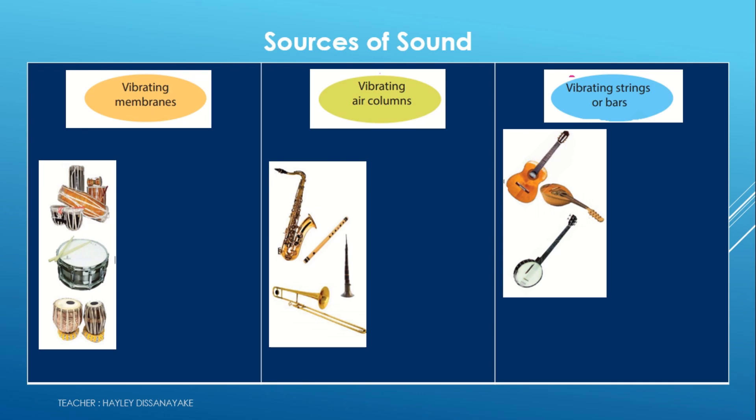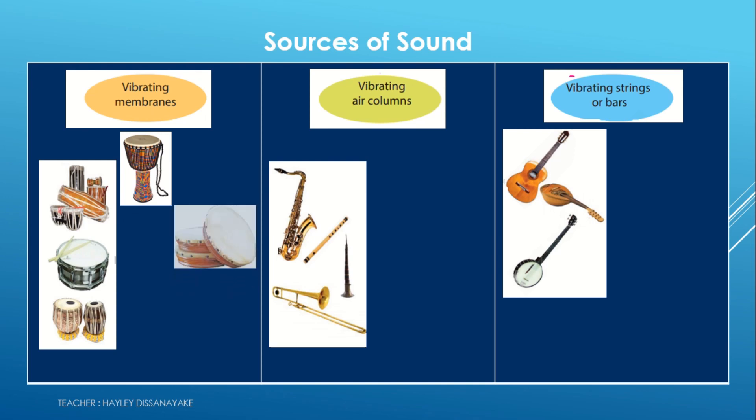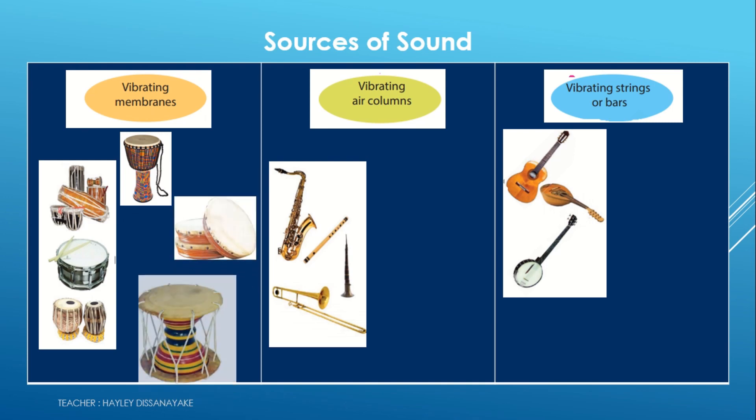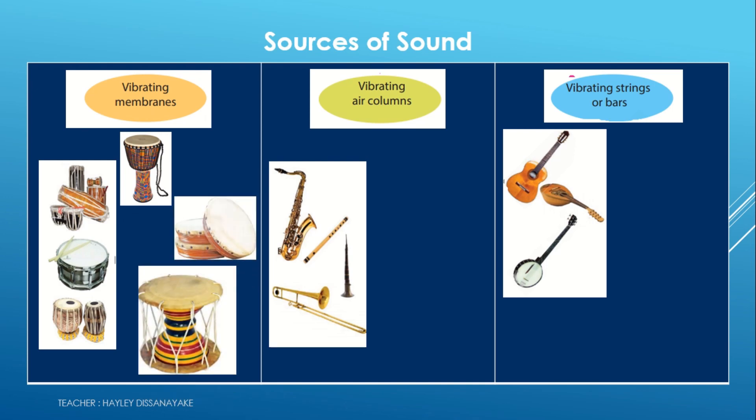The first type is objects which produce sound by vibrating a membrane. For example, the upcountry drum, patabere, beesdrum, double drum, topflower, and rabana.